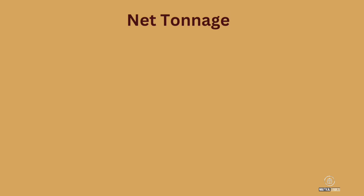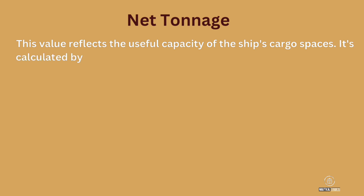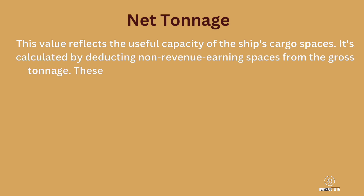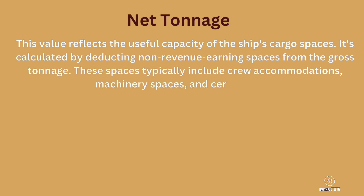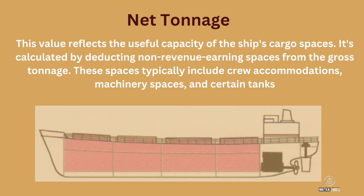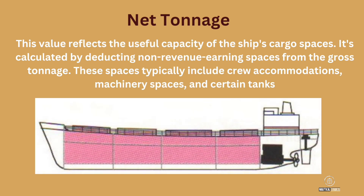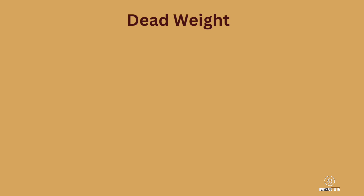Next we have net tonnage. This value reflects the useful capacity of the ship's cargo space. It's calculated by deducting non-revenue earning spaces from the gross tonnage. These spaces typically include crew accommodations, machinery spaces, and certain tanks.